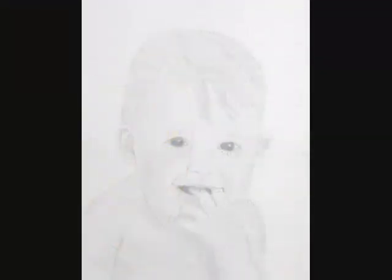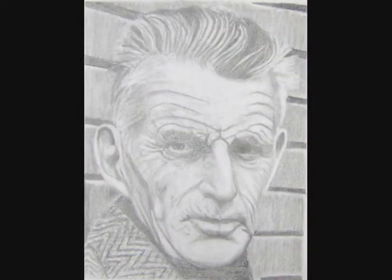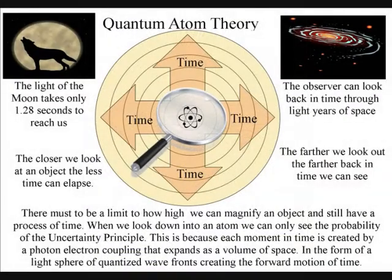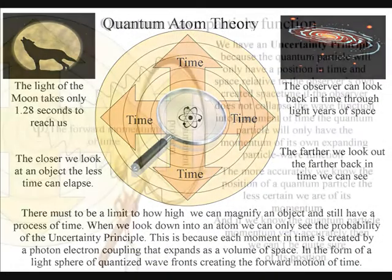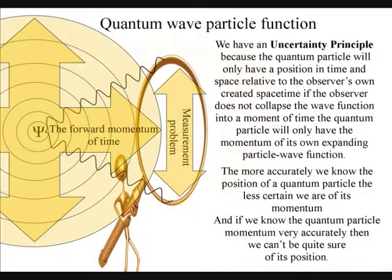It is normal when people cannot understand something for them to say it does not exist. This worked in physics until we looked down into the quantum world of the atom, and found the measurement problem and entanglement.